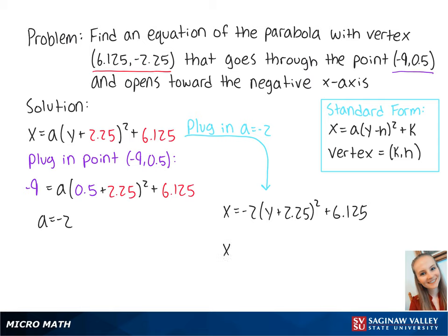This becomes x = -2y² - 9y - 4. This equation is the final answer.